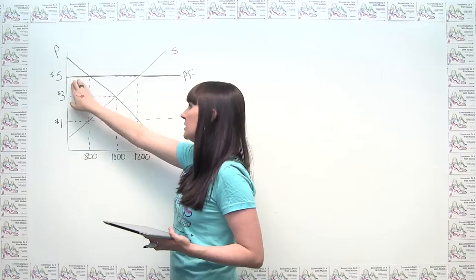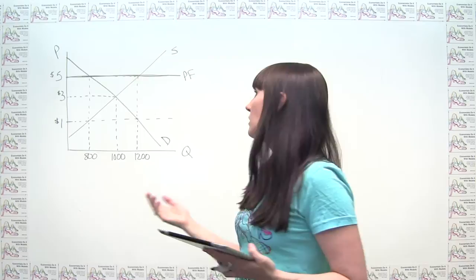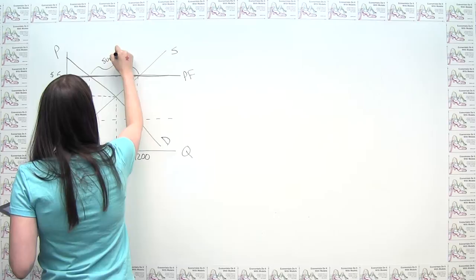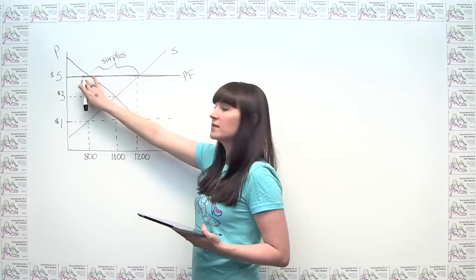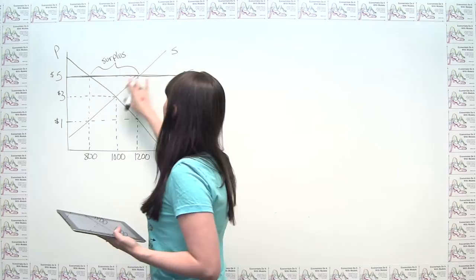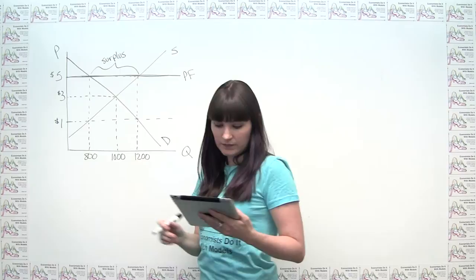That price floor implementation is a bit different from one where the government just says you're not allowed to charge below this price — deal with the surplus yourself. Coming back to the question: how many bushels are produced? If the government is going to buy up all the surplus — the amount supplied at a particular price that consumers don't or can't purchase, or however much supply exceeds demand — then producers will want to produce 1,200 bushels of corn.